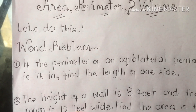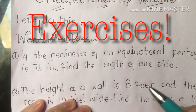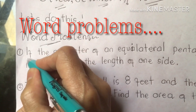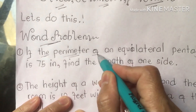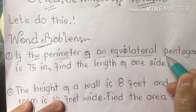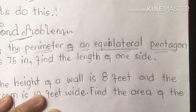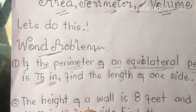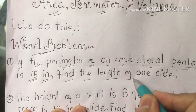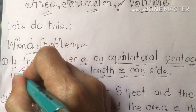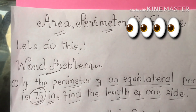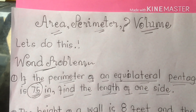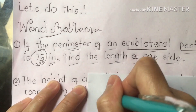Word problem number one: if the perimeter of an equilateral pentagon is 75 inches, find the length of one side. Remember class, we are talking about an equilateral pentagon with a perimeter of 75.